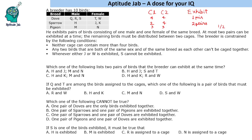Whenever either J or W is exhibited, S cannot be exhibited. Those are the three constraints given to us, and based on this we have to answer the questions. The first question is: which of the following lists two pairs of birds that the breeder can exhibit at the same time?